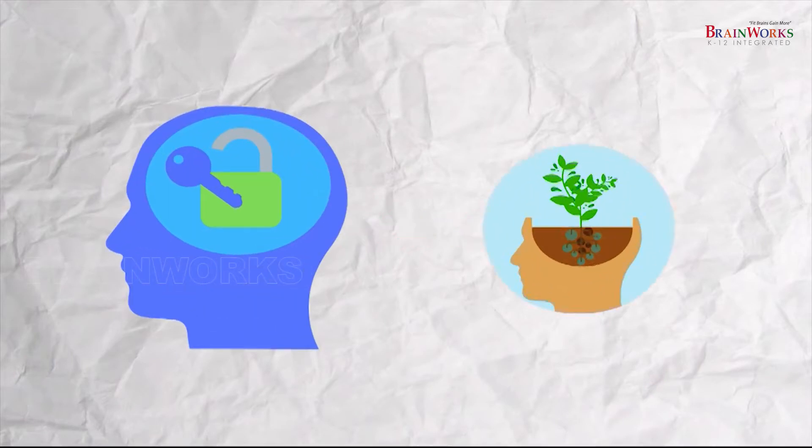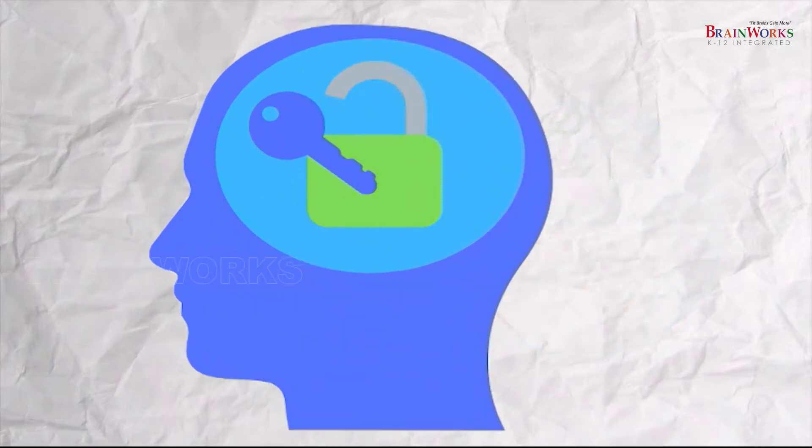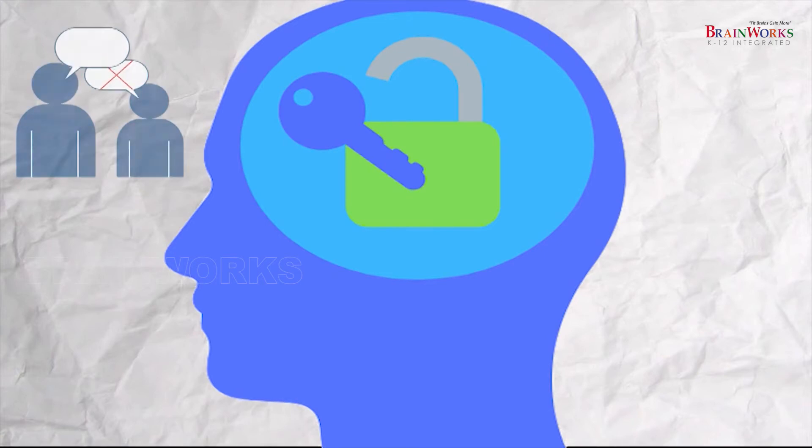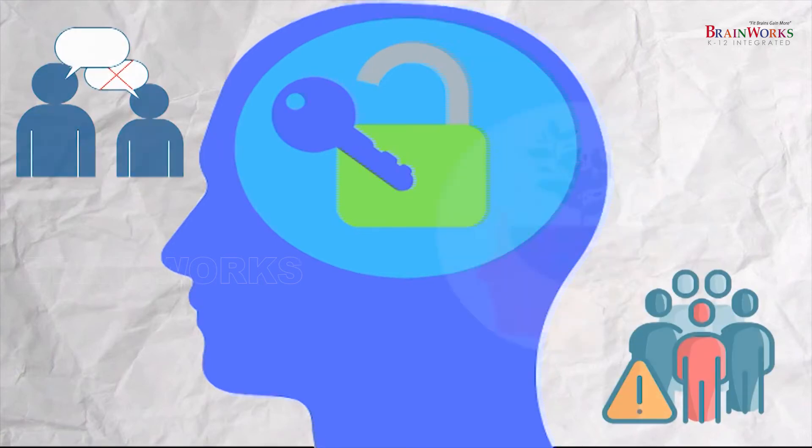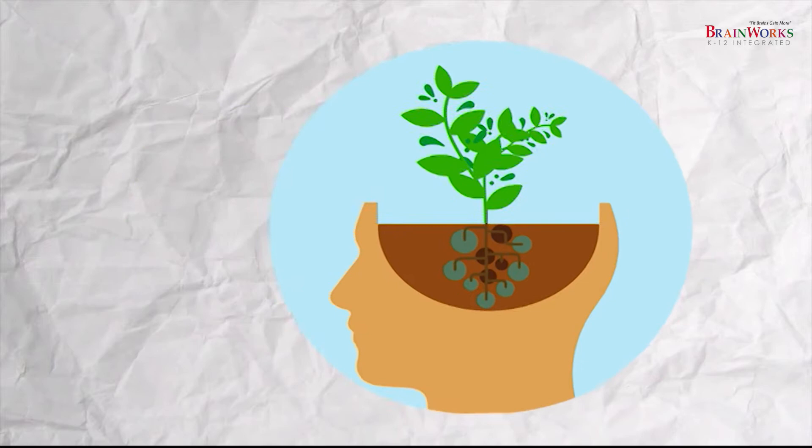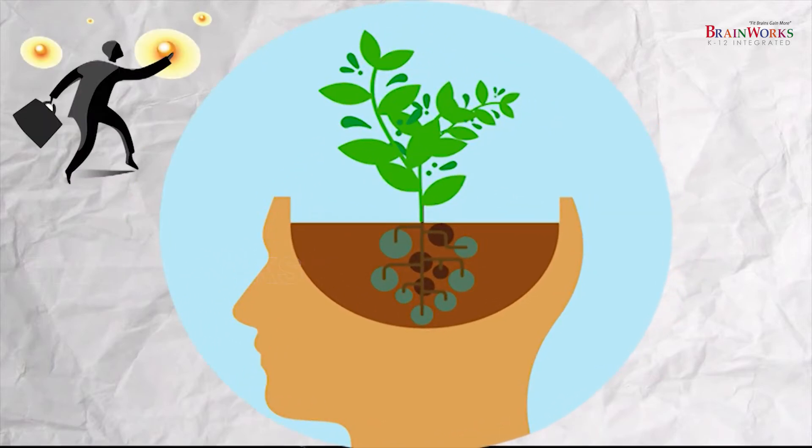In general, there are two types of mindsets that people have. One is the fixed mindset, the one that is reluctant and avoiding. And the other is the opportunity-seeking mindset, the growth mindset.